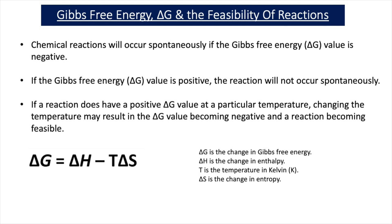In our previous video lessons, we've learnt that delta G is equal to delta H minus T delta S, where delta G is the change in Gibbs free energy, delta H is the change in enthalpy, T is the temperature in Kelvin, and delta S is the entropy change.